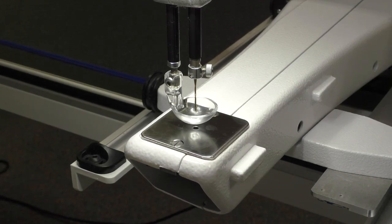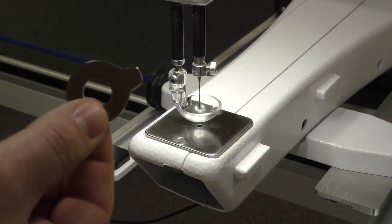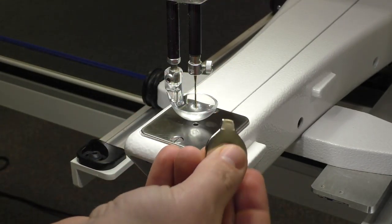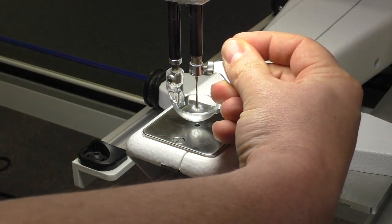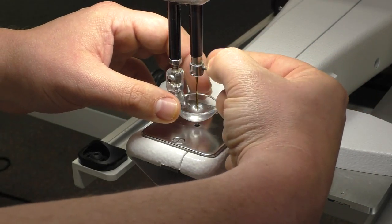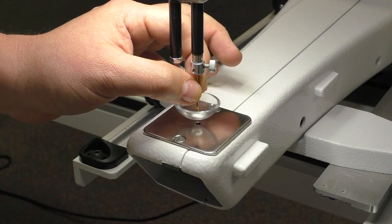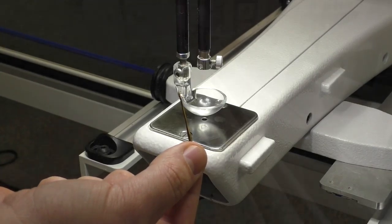So now it's time to change our needle. You're going to take the circle screwdriver that came in your accessories kit, and on the side, here where the screw is, you're going to insert the screwdriver and turn it toward you to loosen it. Once it's loosened, you can grasp the needle and it'll drop straight down, then pull it straight toward you and pull it out.